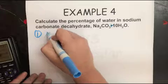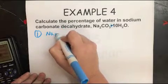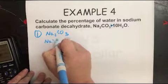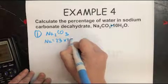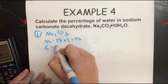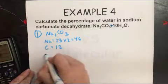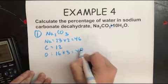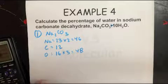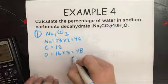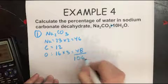So you're going to start by finding the molar mass of Na2CO3. So Na is 23 times 2, which gives you 46. Carbon is 12. Oxygen, 16 times 3, which is 48. So 46 plus 12 plus 48 gives you 106. Okay,